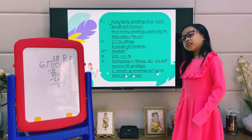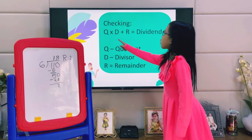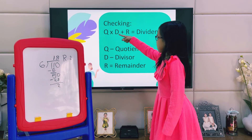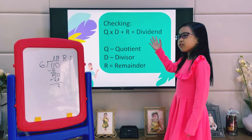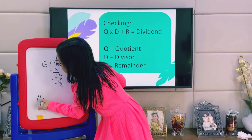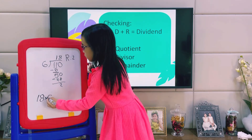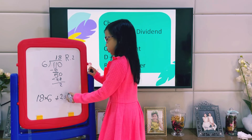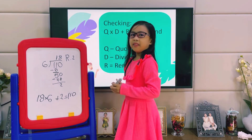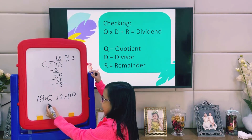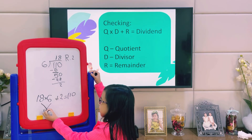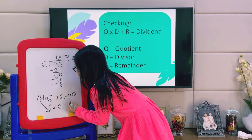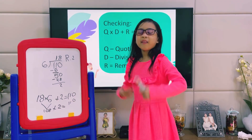How do we check if our answer is correct? The formula for checking is: Quotient times Divisor plus Remainder equals the Dividend. So, 18 (quotient) times 6 (divisor) plus 2 (remainder) equals 110 (dividend). 18 times 6 equals 108, plus 2 equals 110. That means we are correct.